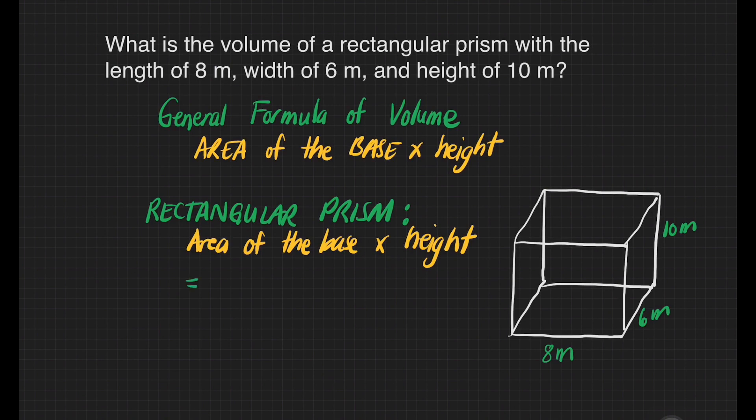Do you still remember the formula for the area of a rectangle? Yes, it's length times width. To get the volume, just multiply it by height. That's going to be length times width times height. Now let us find out the area of the base.